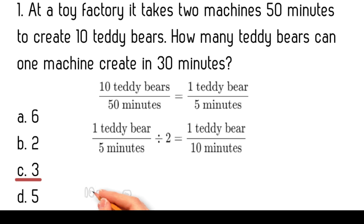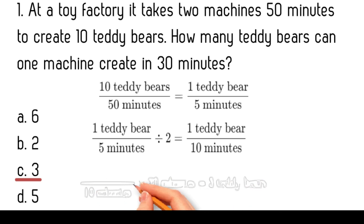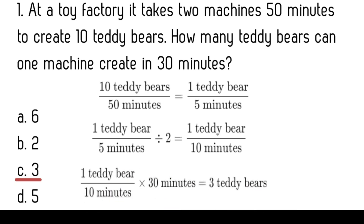Then, we calculate the number of teddy bears one machine can create in 30 minutes. Using the rate of the machine: 1 teddy bear per 10 minutes times 30 minutes equals 3 teddy bears. Thus, one machine can create 3 teddy bears in 30 minutes. The correct answer is 3.